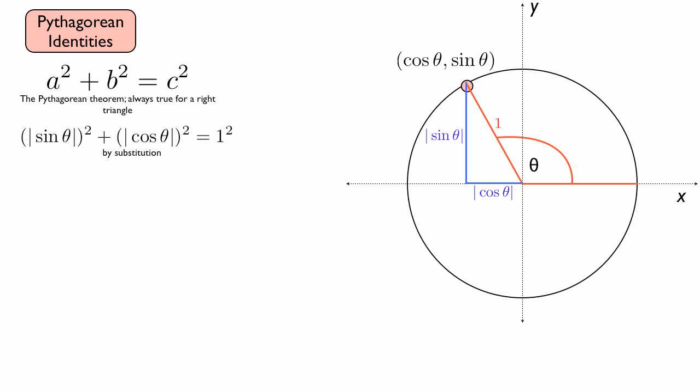And we can simplify this. When we square it, we don't need to worry about the absolute value anymore because we know it's going to be positive, even if sine theta was negative. So we have sine squared theta plus cosine squared theta is equal to 1.